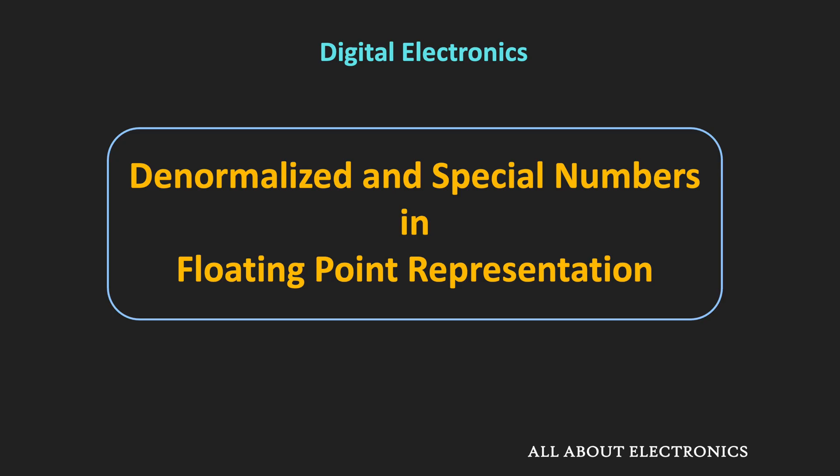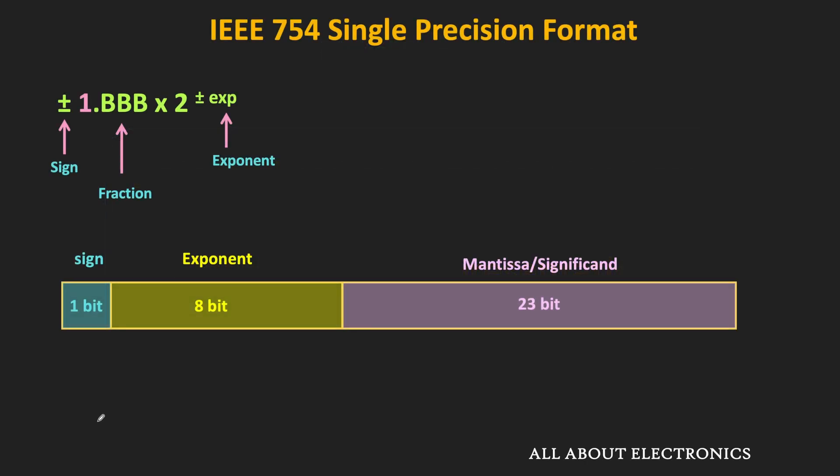Hey friends, welcome to the YouTube channel All About Electronics. In this video, we will see how to represent special numbers like zero and infinity, as well as the denormalized number in the floating point representation. In the previous video, we saw how to represent any floating point number in the single precision and the double precision format.